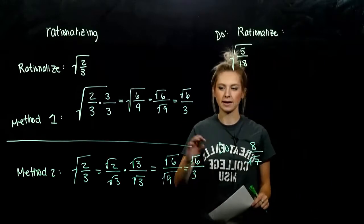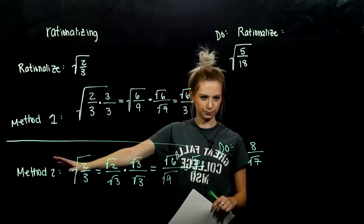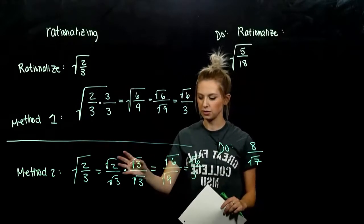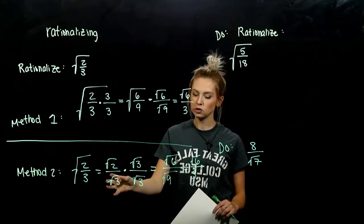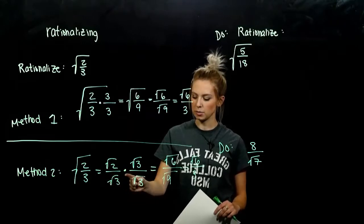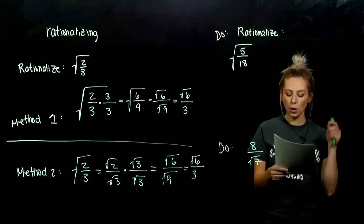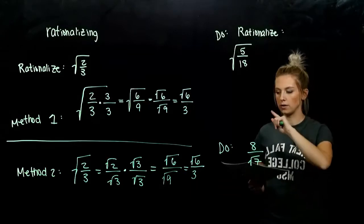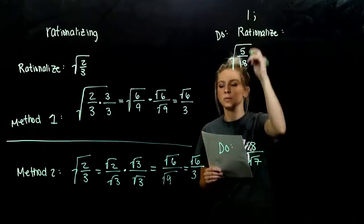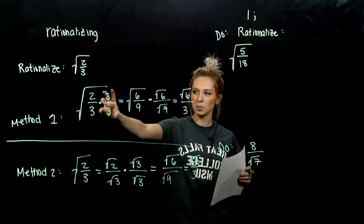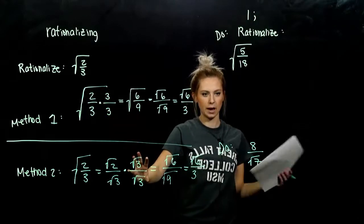After a while, we'll start to recognize when it's easiest to use method one versus method two. Generally, we stick to method two when that radical is already split up. If I have a radical just in the denominator, we usually multiply by itself, top and bottom. We can always multiply by one to make a denominator a perfect square — in method one, we multiply on the inside by one; in method two, we multiply on the outside by one.